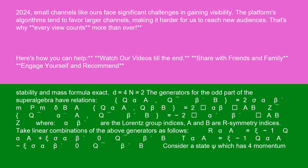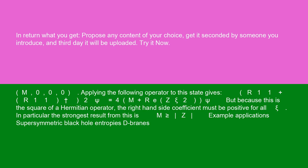Take linear combinations of the above generators as follows: R_αa = (ψ⁻¹) Q_αa + ψ σ^0_αβ Q̄_βb; T_αa = (ψ⁻¹) Q_αa - ψ σ^0_αβ Q̄_βb. Consider a state |ψ⟩ which has momentum (m, 0, 0, 0).